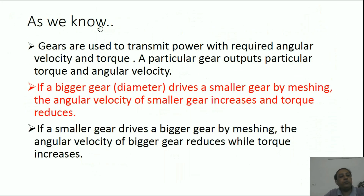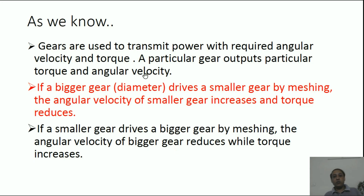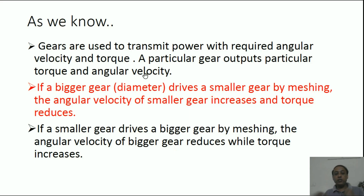As we know, gears are used to transmit power with the required angular velocity and torque from the driver to the driven. A particular gear outputs a particular torque and angular velocity. For example, when engaging a car gear — suppose it is first gear — then for that first gear there is a particular amount of torque and a particular amount of angular velocity.